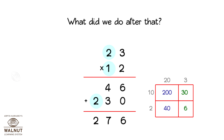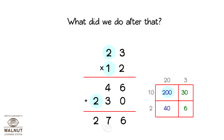But actually, 1 of 12 is in the tens place, and 2 of 23 is in the tens place too. So we have multiplied 10 by 20, not 1 by 2. The answer is 10 into 20 is equal to 200. That is why we write 2 in the hundreds place.